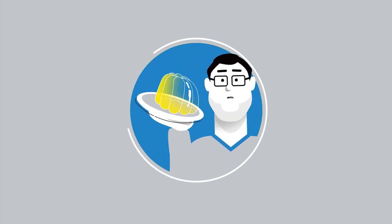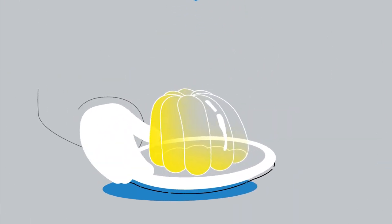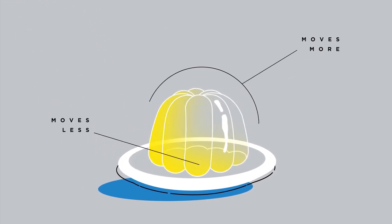Because your brain tissue is soft, similar to the consistency of gelatin, different sections of the brain can move at different rates.